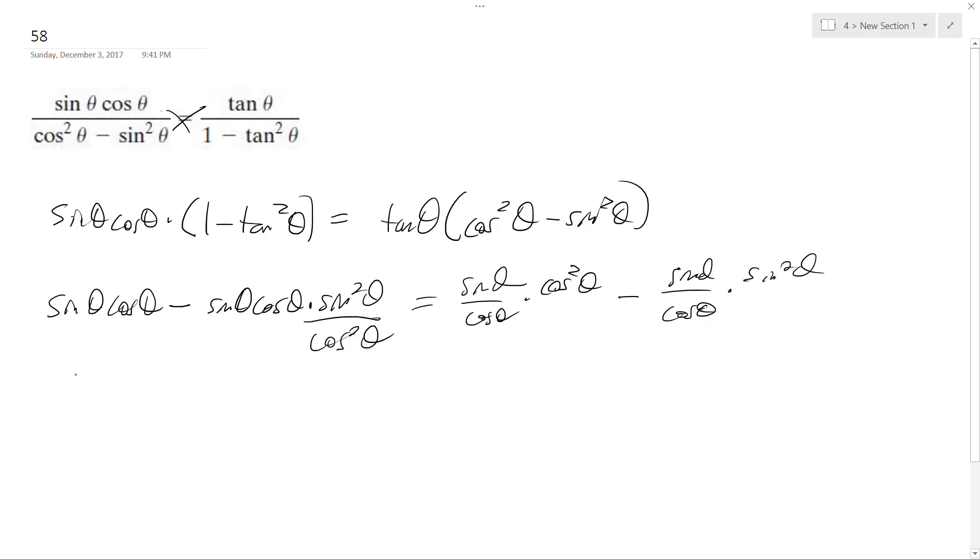so sine theta cosine theta minus sine theta, and this cancels out, this just becomes 1, so this is sine cubed theta over cosine theta.